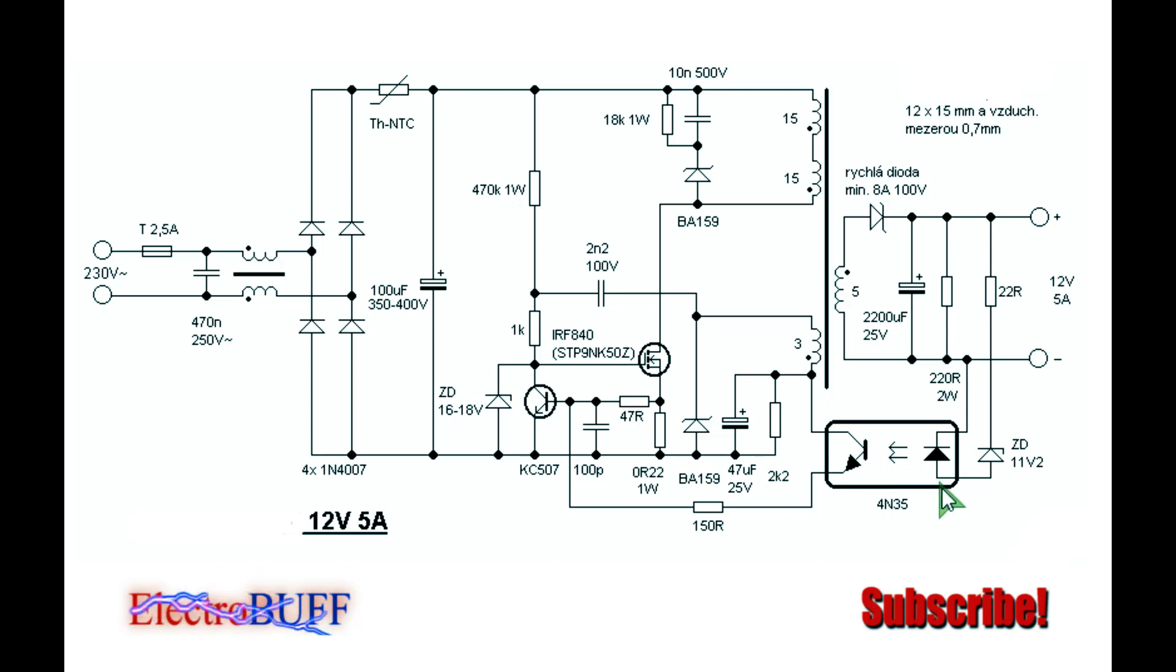The optocoupler, you can even use the PC817 or any optocoupler you have lying around. This also has a Zener diode across the gate and the negative rail of the MOSFET, which should be rated at least 12 to 18 volts depending on the MOSFET you're using, since any voltage above that can easily damage the MOSFET.